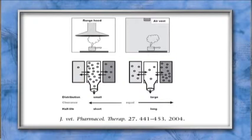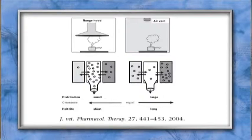É importante conhecer esses conceitos em relação à meia-vida das drogas usadas no sistema nervoso central. Por exemplo, se duas drogas tiverem depuração (clearance) semelhante, mas volumes de distribuição diferentes — uma com grande volume (abrangendo vários compartimentos) e outra com volume menor (apenas compartimento central) — a de maior volume de distribuição terá meia-vida mais longa, enquanto a de menor volume terá meia-vida mais curta, desde que a depuração seja semelhante.